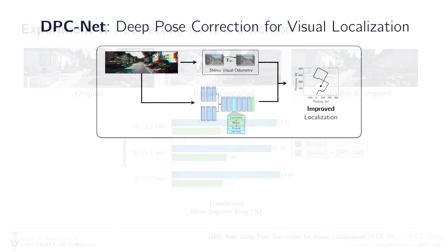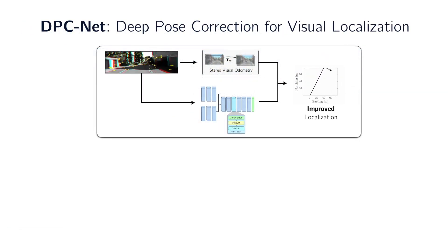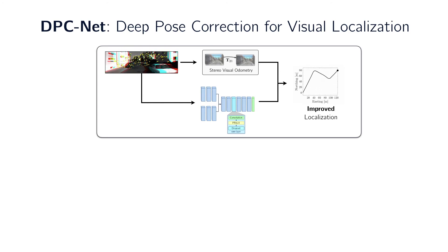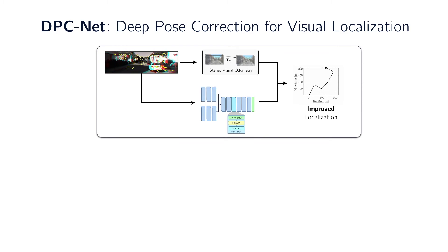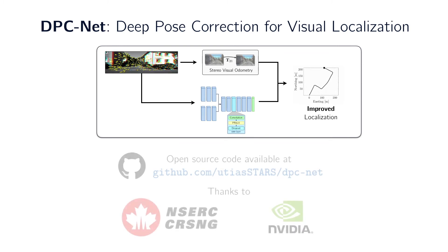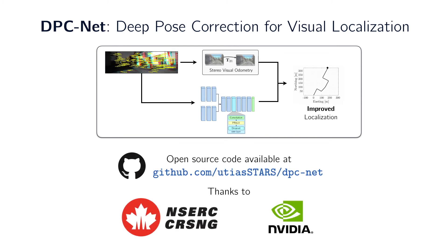In conclusion, we believe the deep pose-correction paradigm is a promising way to incorporate deep networks into existing localization pipelines for robust long-term autonomy. Please note that you can find a PyTorch-based implementation of DPCnet on GitHub.